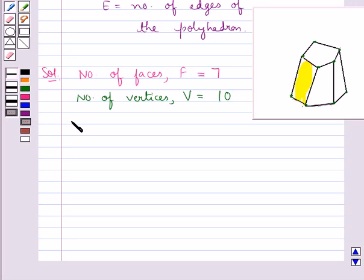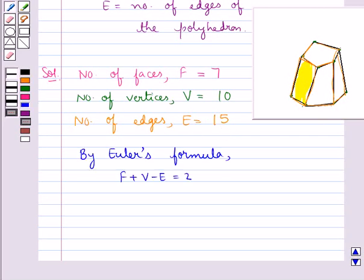Then the number of edges, that is E, would be: this is one edge, two, three, four, five, six, seven, eight, nine, ten, eleven, twelve, and three edges are behind. So in all we have fifteen edges, that is E equals 15.